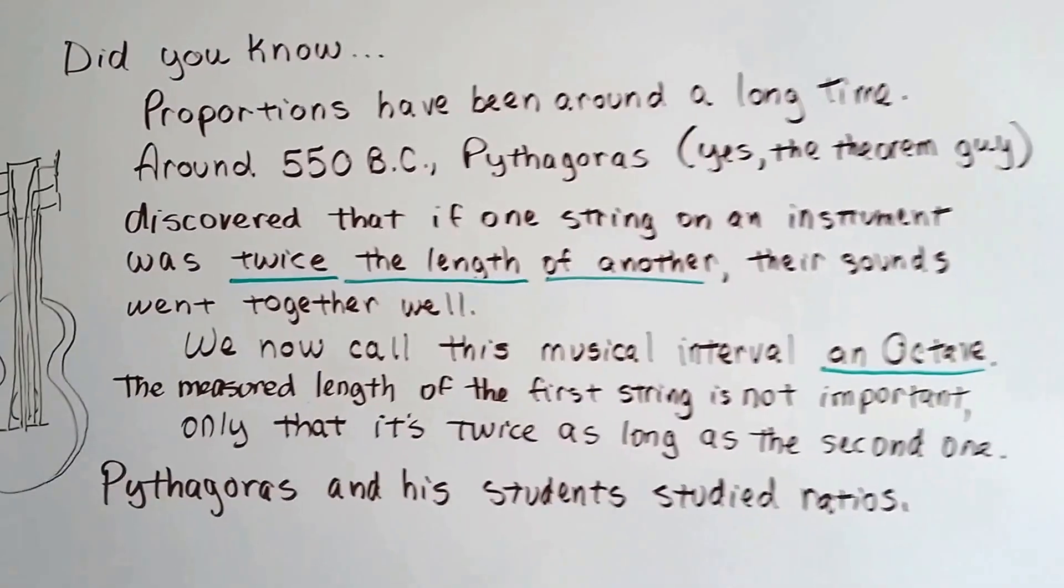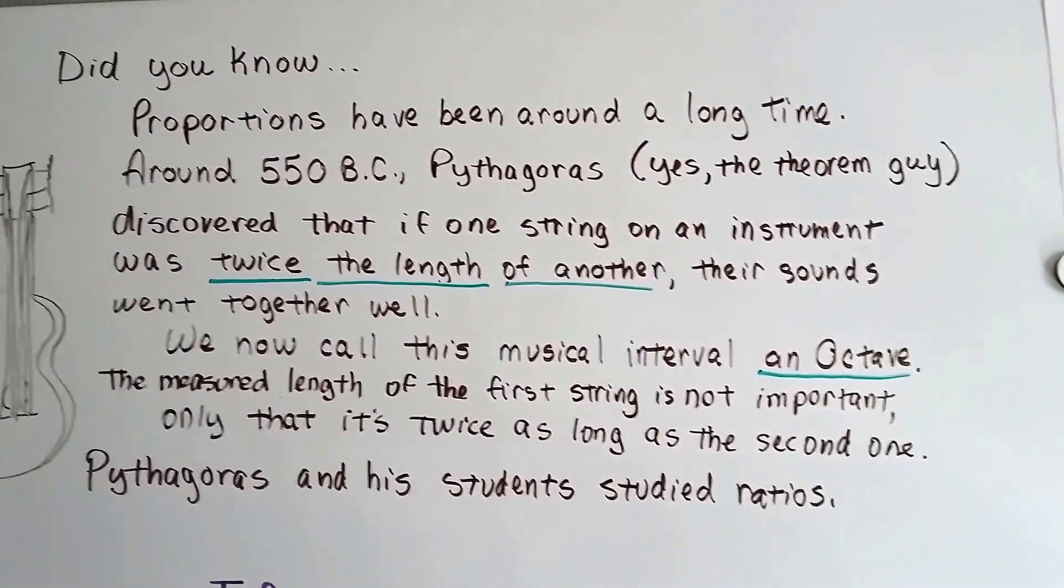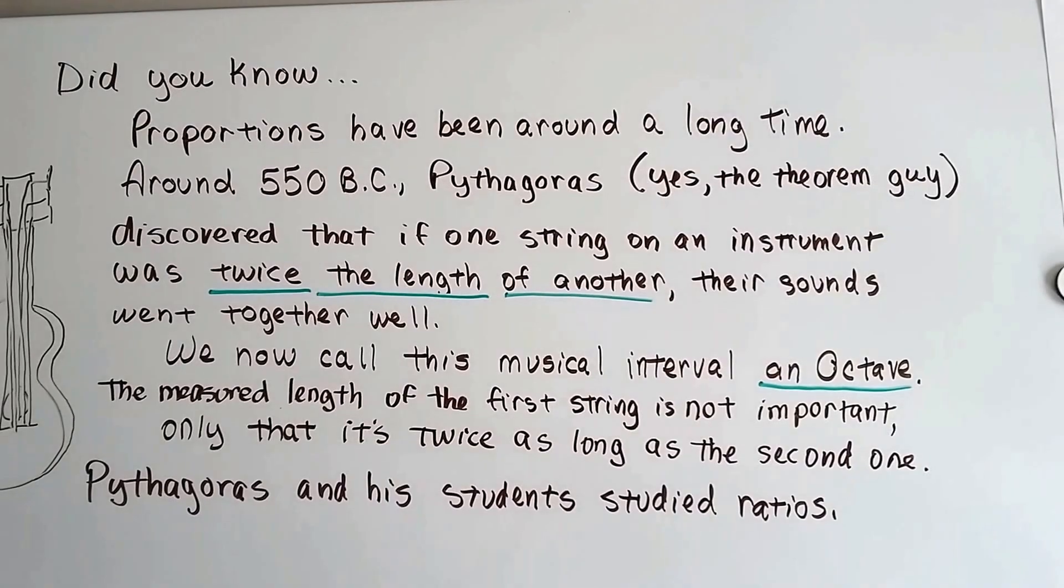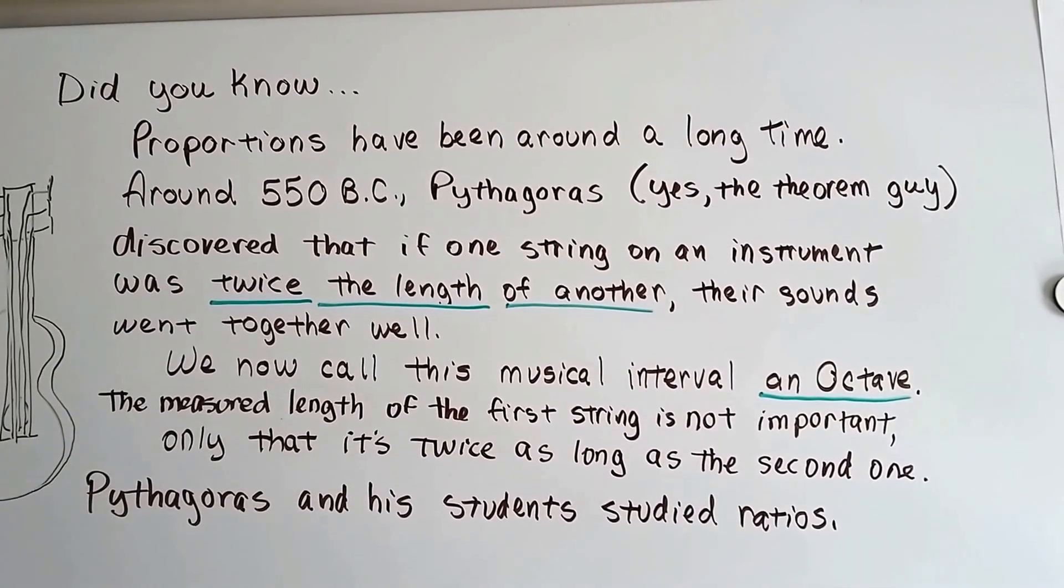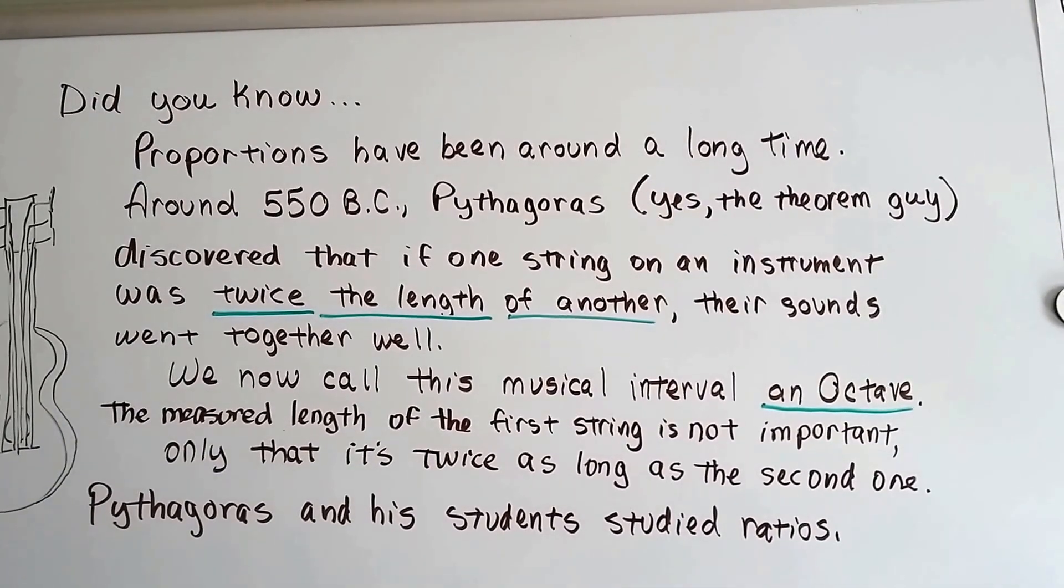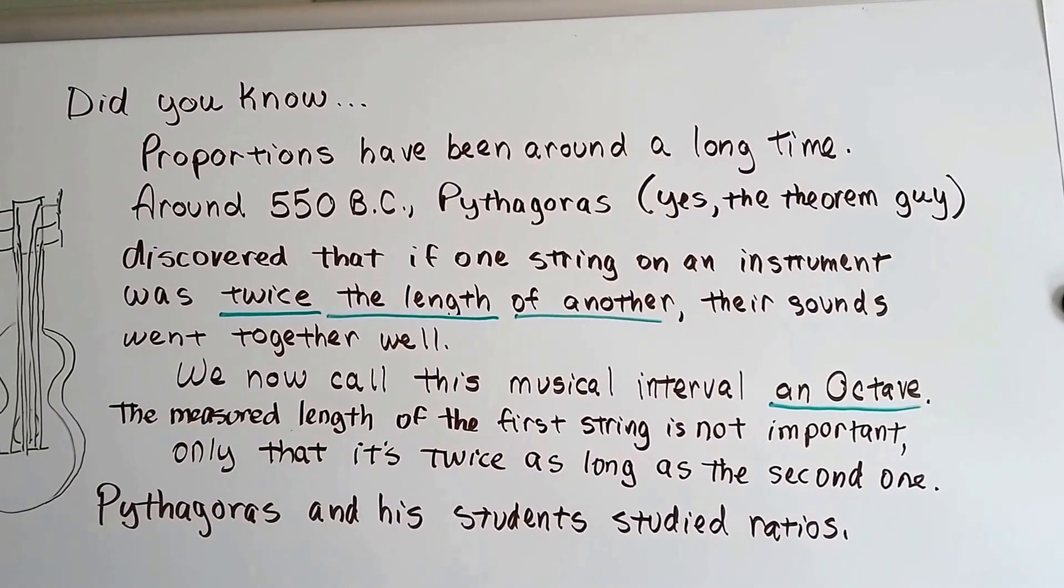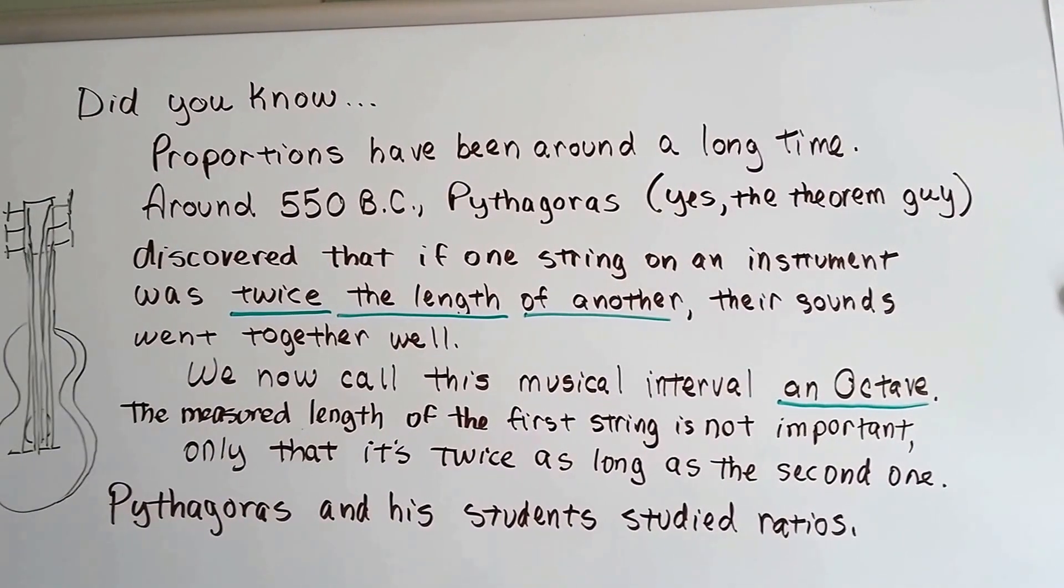Let's do a little history real quick. Did you know that proportions have been around for a long time? Around 550 BC, Pythagoras, yep the theorem guy, discovered that if one string on an instrument was twice the length of another, their sounds went well together.